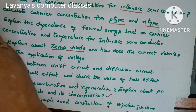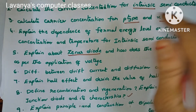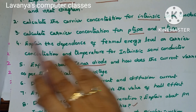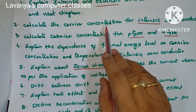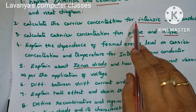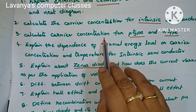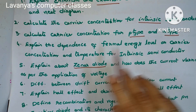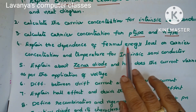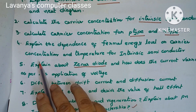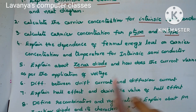You need to explain intrinsic and extrinsic semiconductors with examples and diagrams. Second question is calculate the carrier concentration for intrinsic semiconductors. Third question is calculate carrier concentration for P-type and N-type semiconductors.